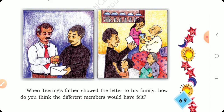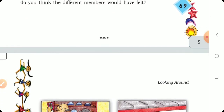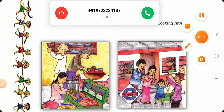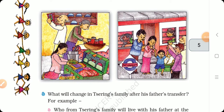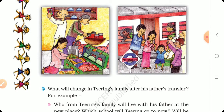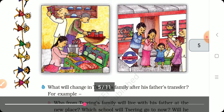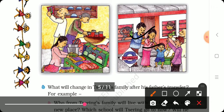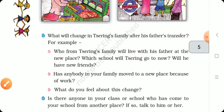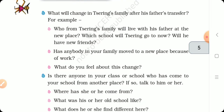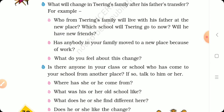There is the father, his mother, his father. In the second picture, see who is going to the other city. What will they do in the other city? What will change after his father's transfer? For example, who will leave with his father to the new place? Which school will he transfer to? Will he have new friends? He will go to the other city, go to a new school, and will not be with his old friends. Then he will have new friends.